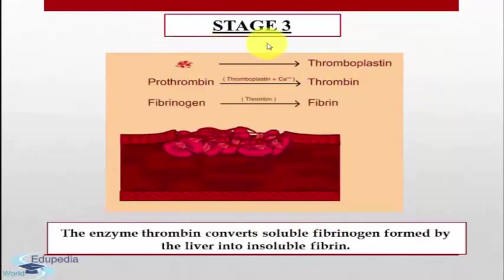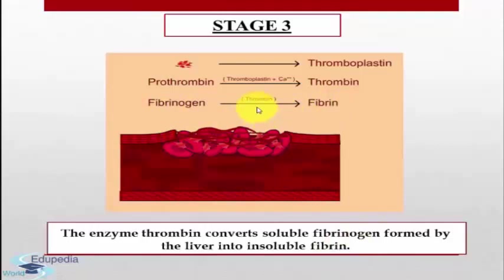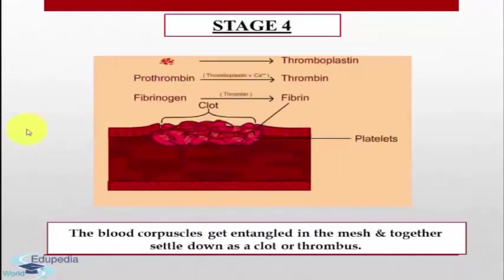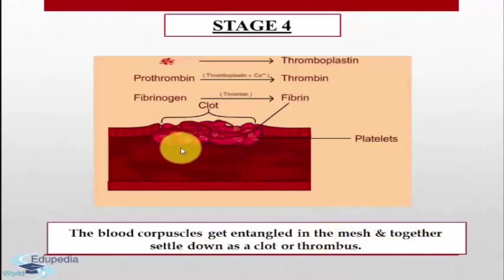In stage 3, the enzyme thrombin converts soluble fibrinogen formed by the liver into insoluble fibrin. As you can see in this figure, fibrinogen is converted to fibrin in the presence of thrombin. Fibrin is a solid substance that forms threads; these microscopic threads of fibrin are sticky and form a network at the wound. The last stage of blood clotting is the stage in which the blood cells get entangled in the mesh and together settle down as a clot or thrombus.